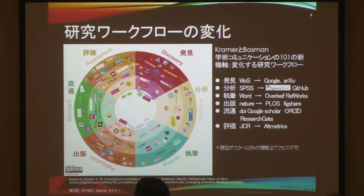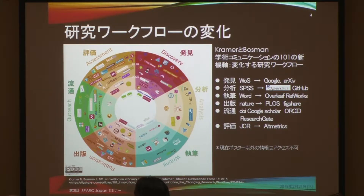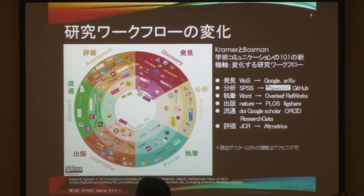This format explains the existence of services supporting academic communication and academic work. Based on the research life cycle, there are several elements. The first step is discovery. Traditionally those used Web of Science, but now people use different tools like Google or ArXiv to look for papers and theses. For analysis, it doesn't have to be SPSS; now there are places to share materials better, like R-OpenSci and others.